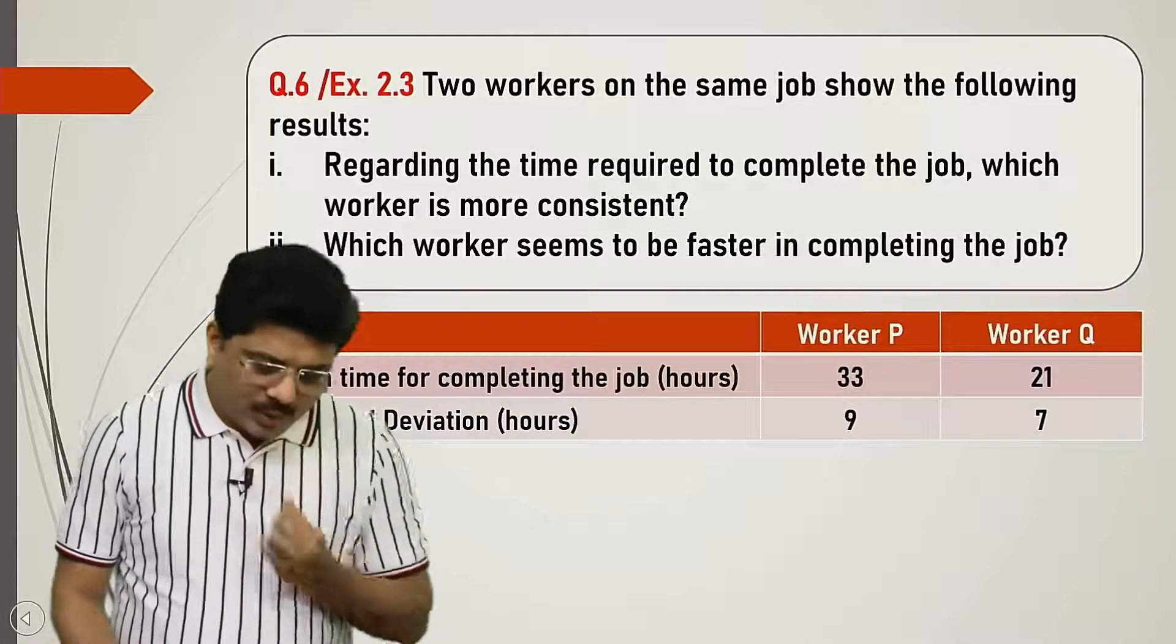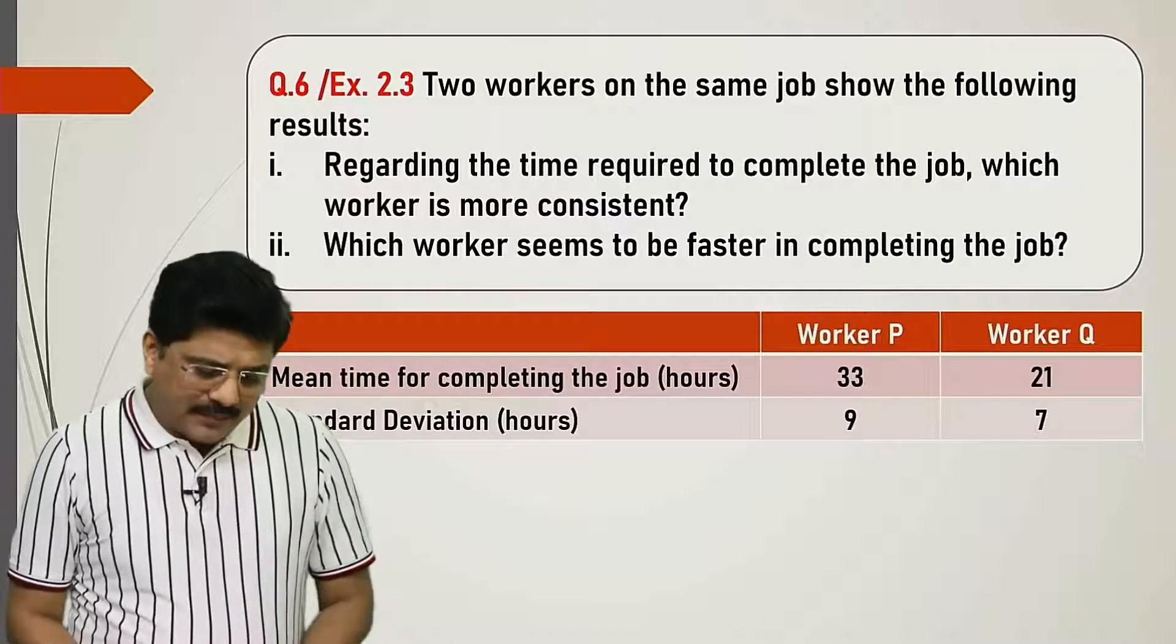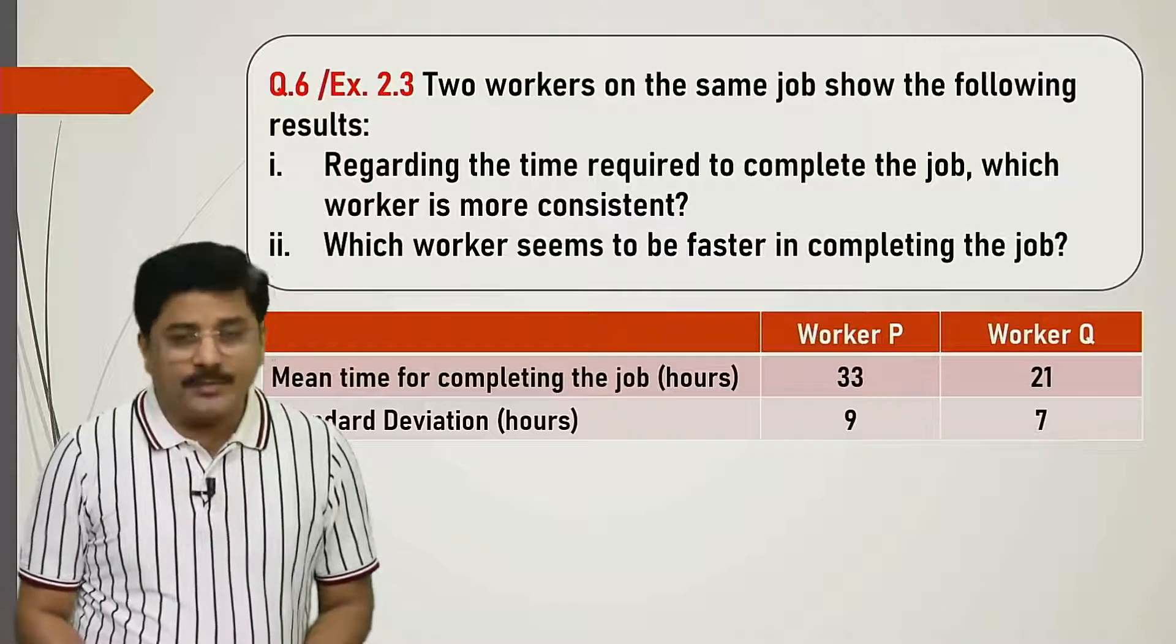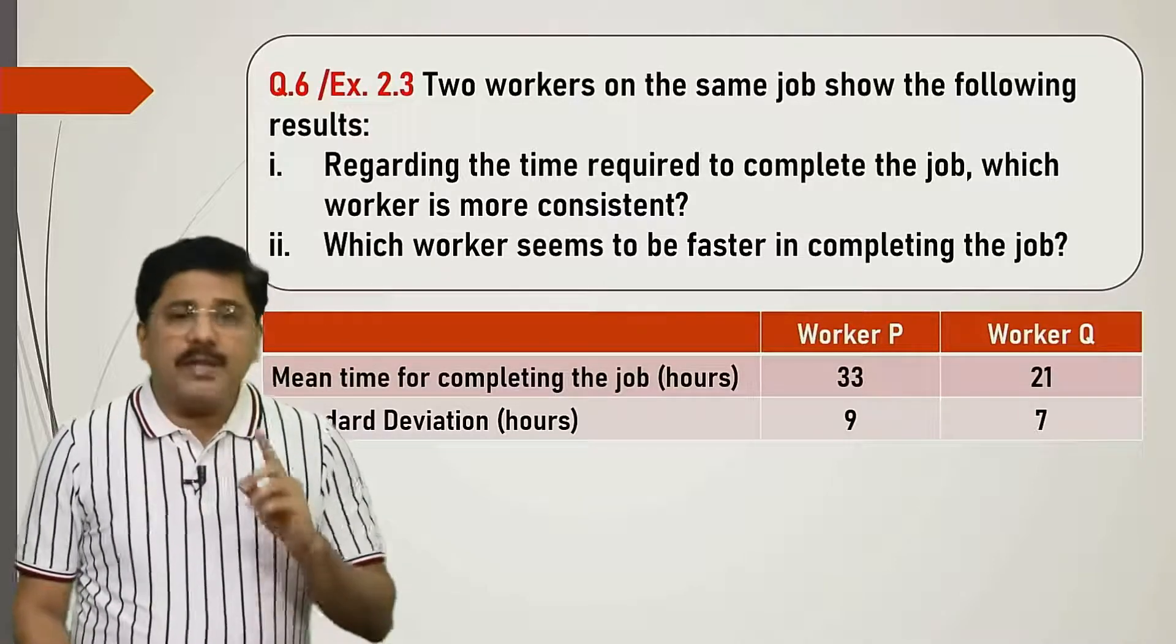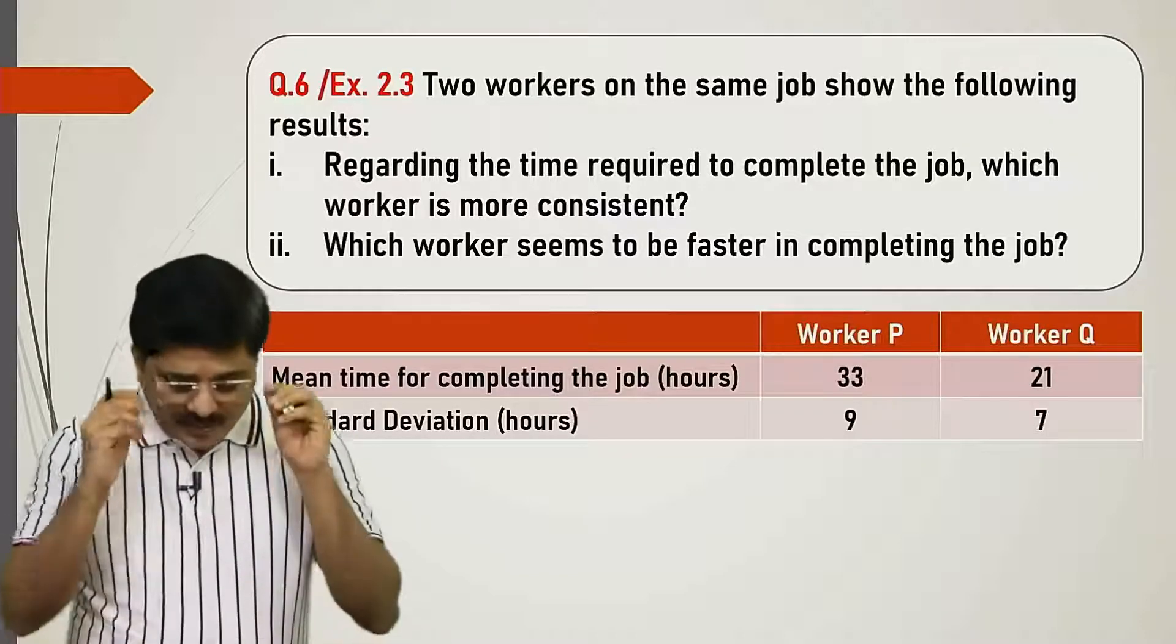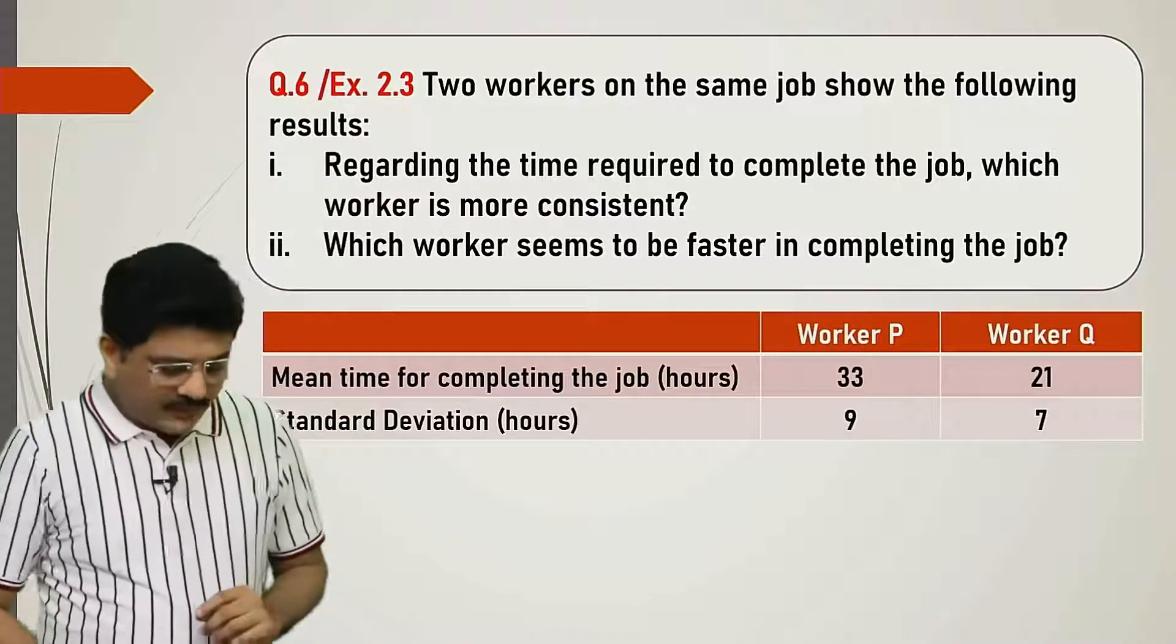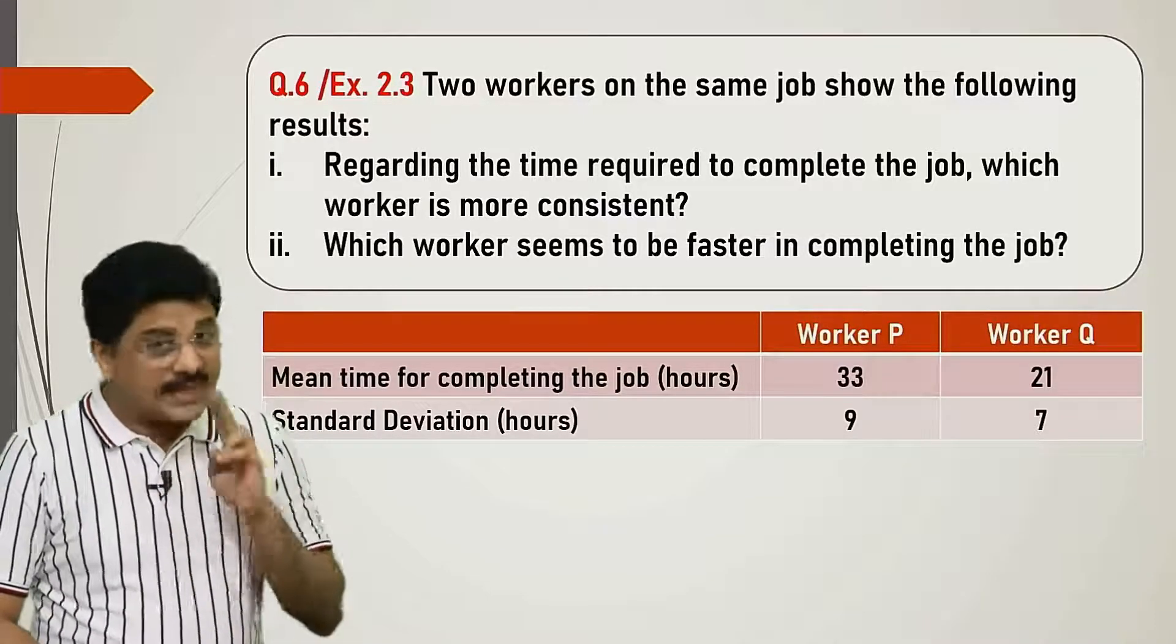Next. Two workers on the same job show the following results. Regarding the time required to complete the job, which worker is more consistent? Which worker seems to be faster in completing the job? Two questions are asked. Second question first.